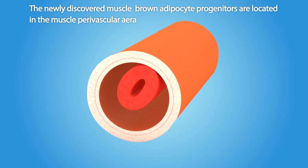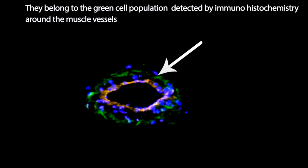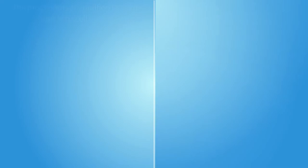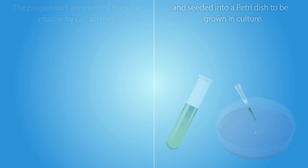The newly discovered muscle brown adipocyte progenitors are located in the muscle perivascular area. They belong to the green cell population, detected by immunohistochemistry around the muscle vessels. The progenitors are purified from the muscle by cell sorting and seeded into a petri dish to be grown in culture. The progenitors are pushed by a specific cocktail to differentiate into brown adipocytes.